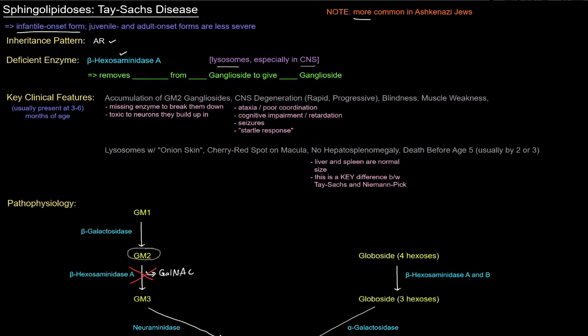Beta-hexosaminidase A removes N-acetylgalactosamine from GM2 ganglioside to give GM3 ganglioside. One of the key features is the accumulation of GM2 ganglioside, so that's pretty important.